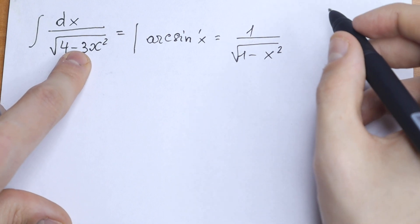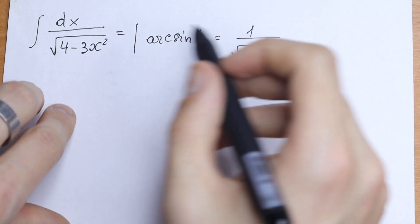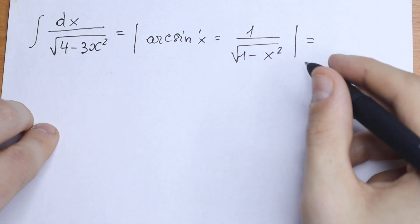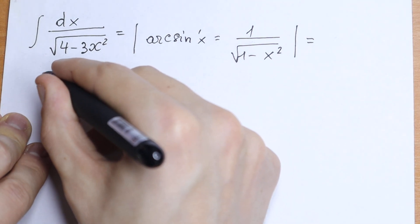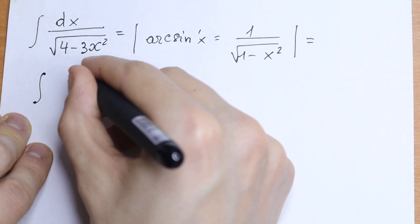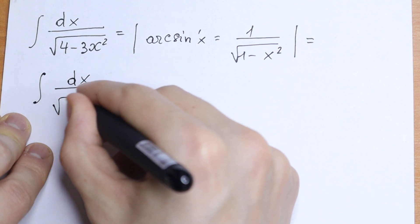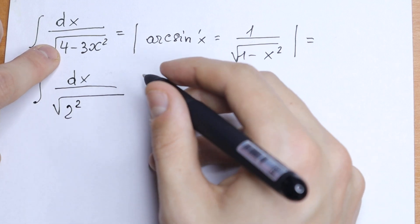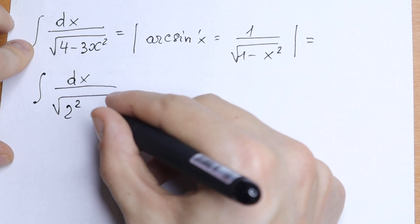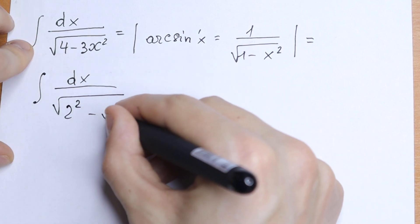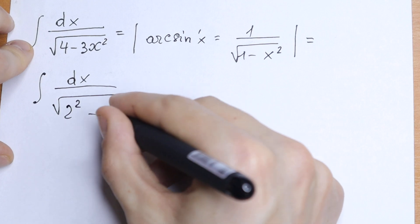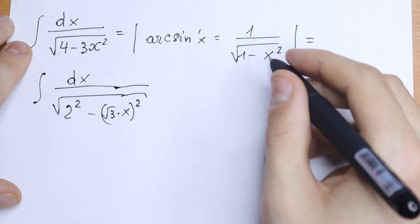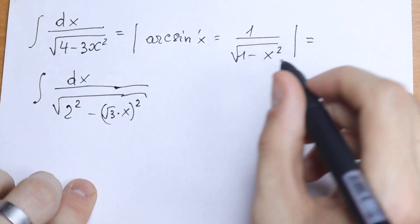I want to suggest a really good trick. We can write this integral in a different way: integral of dx over the square root of — and inside, this 4 is 2 squared, and we can write the other term as the square of square root of 3 times x, to the second power.